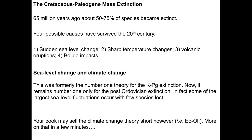The Cretaceous-Paleogene mass extinction is kind of special because it's closer to the modern — we have a much richer fossil record for this than for any of the other mass extinctions. Again, this occurred 65 million years ago, and about 50 to 75 percent of species went extinct at this time. Scientists have been arguing for a long time about the causes. The four most recent ideas include sea level change, sharp temperature changes, volcanic eruptions, and bolide impacts — large extraterrestrial bodies striking the Earth.